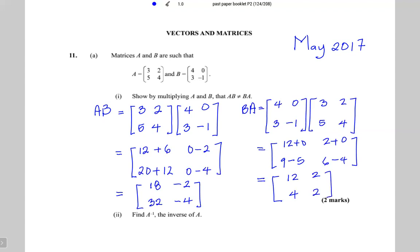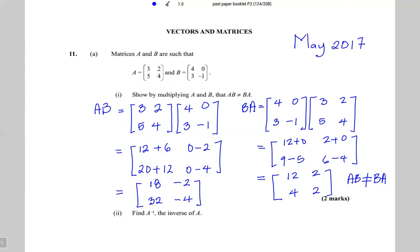By doing a side-by-side comparison, it is easy to see that the matrix product AB is not equal to the matrix product BA. We were asked to show by multiplying A and B that AB is not equal to BA, and we just did that.